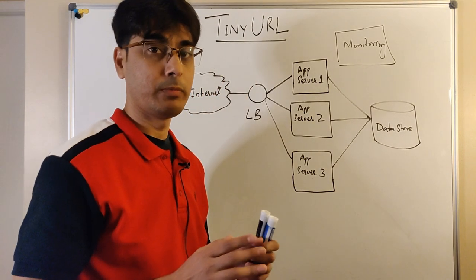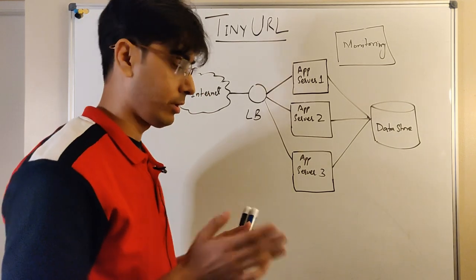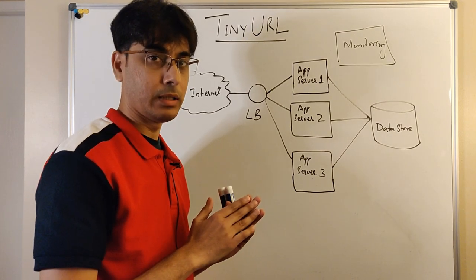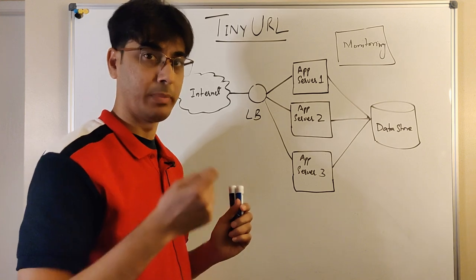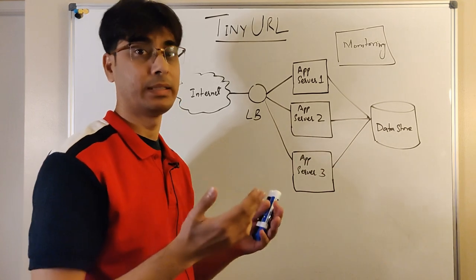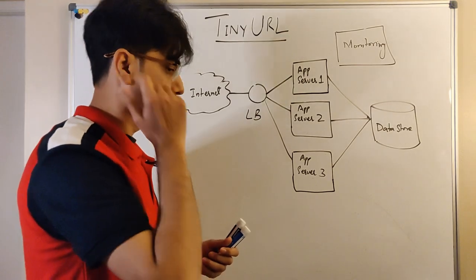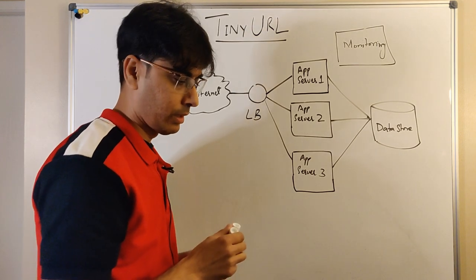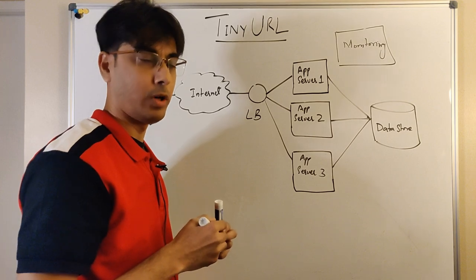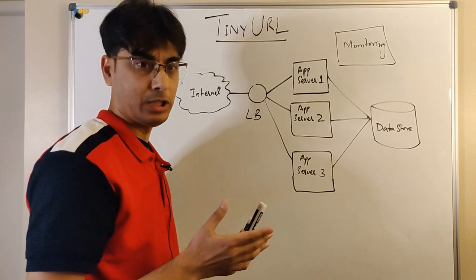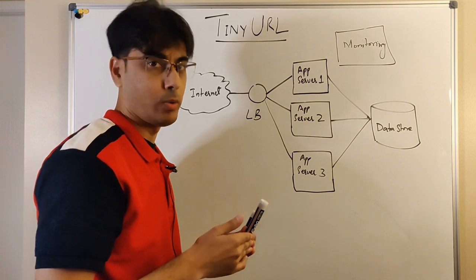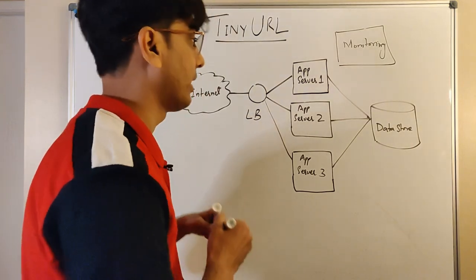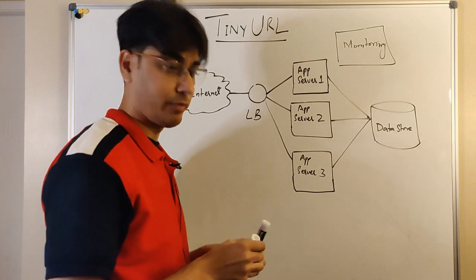Since the number of read requests will be much higher than write requests — we can safely assume for every short URL created, users may query the big URL at least 10 times — we should use an in-memory cache to store mappings between short URLs and big URLs to minimize load on the data store. We have two options: a local in-memory cache in each application server, or a global in-memory cache.